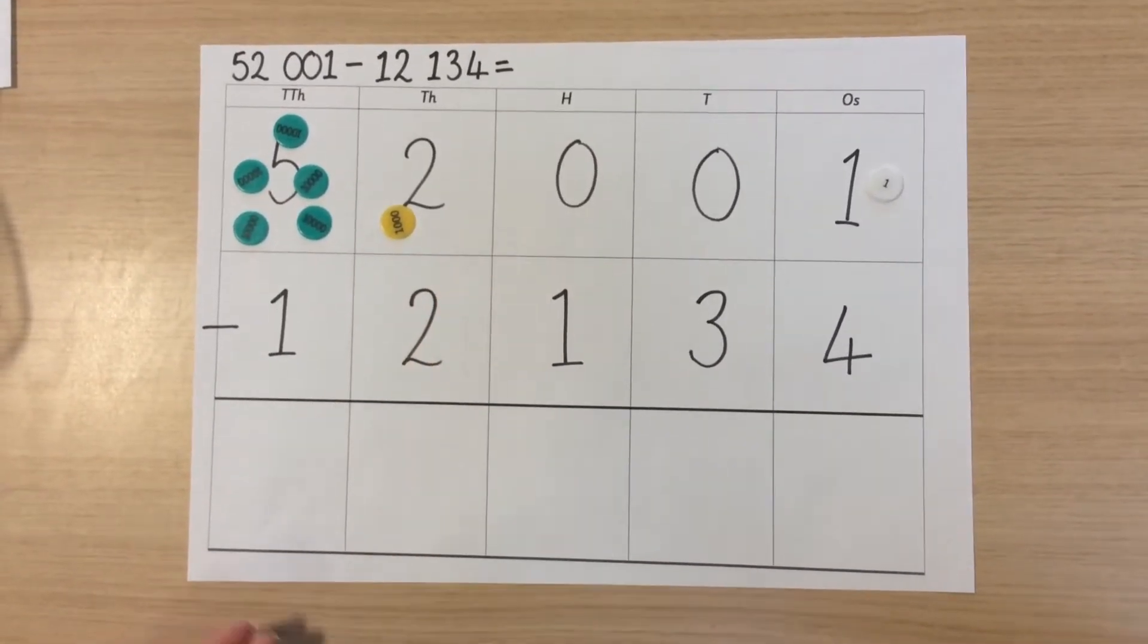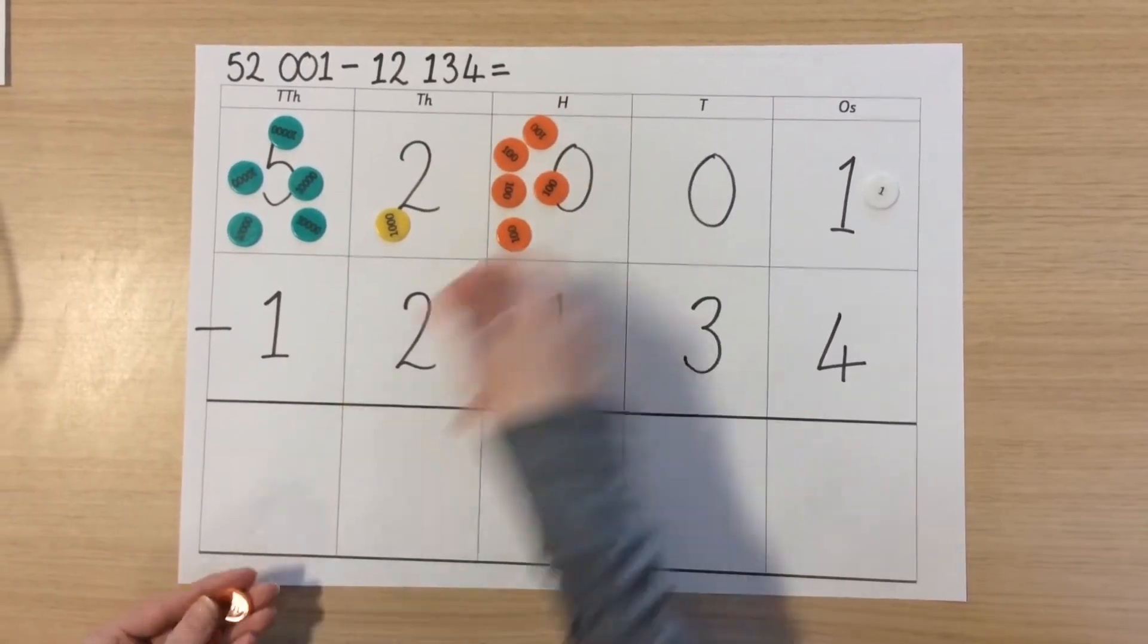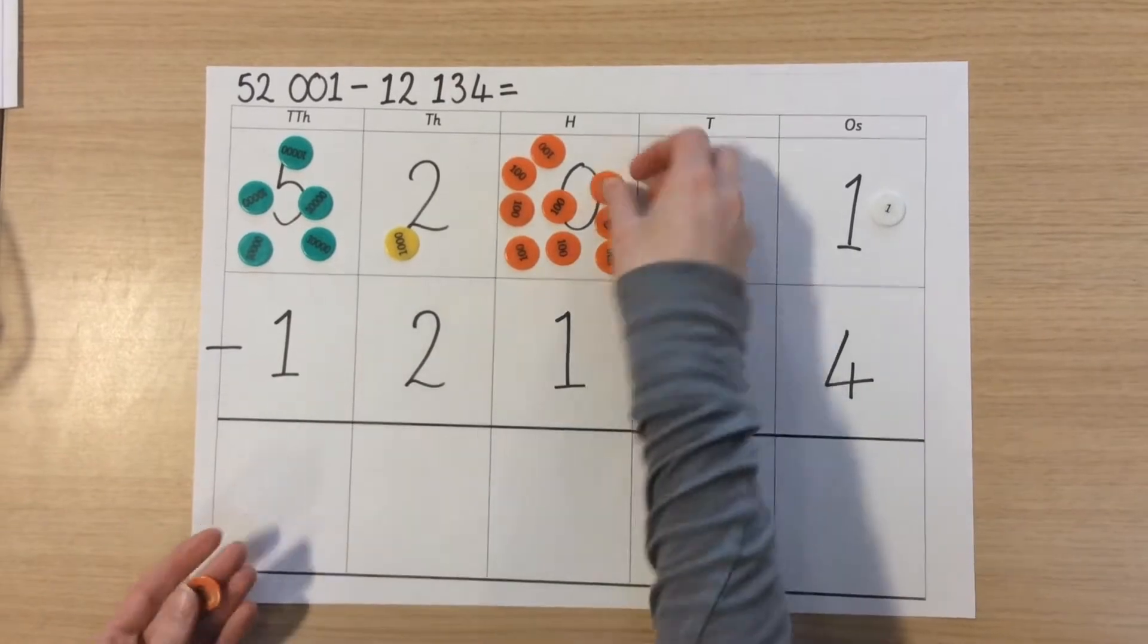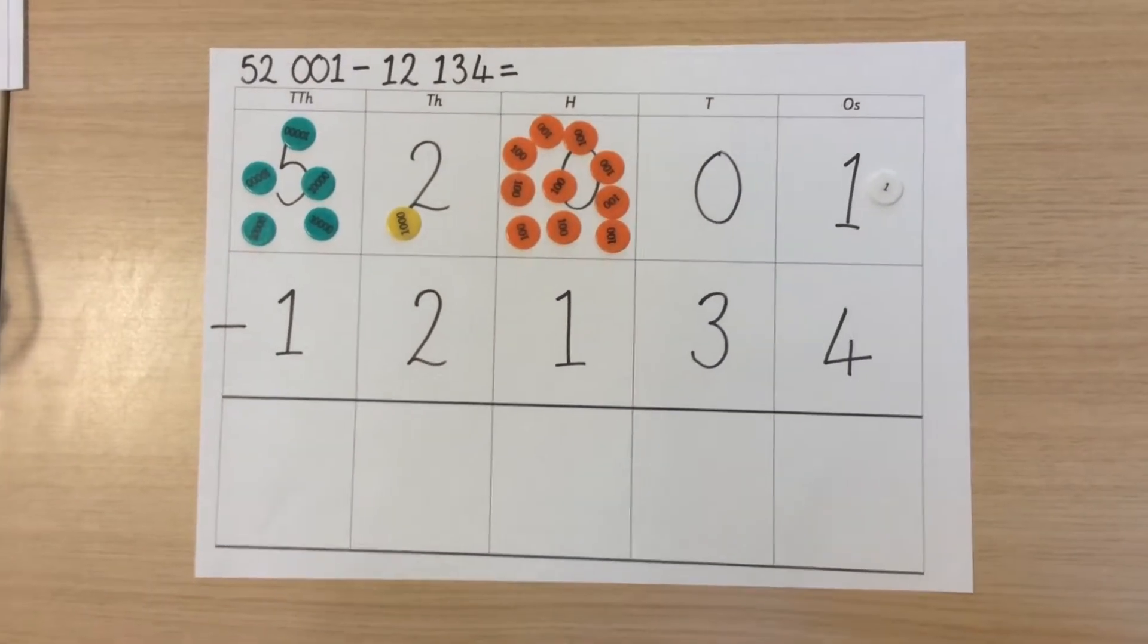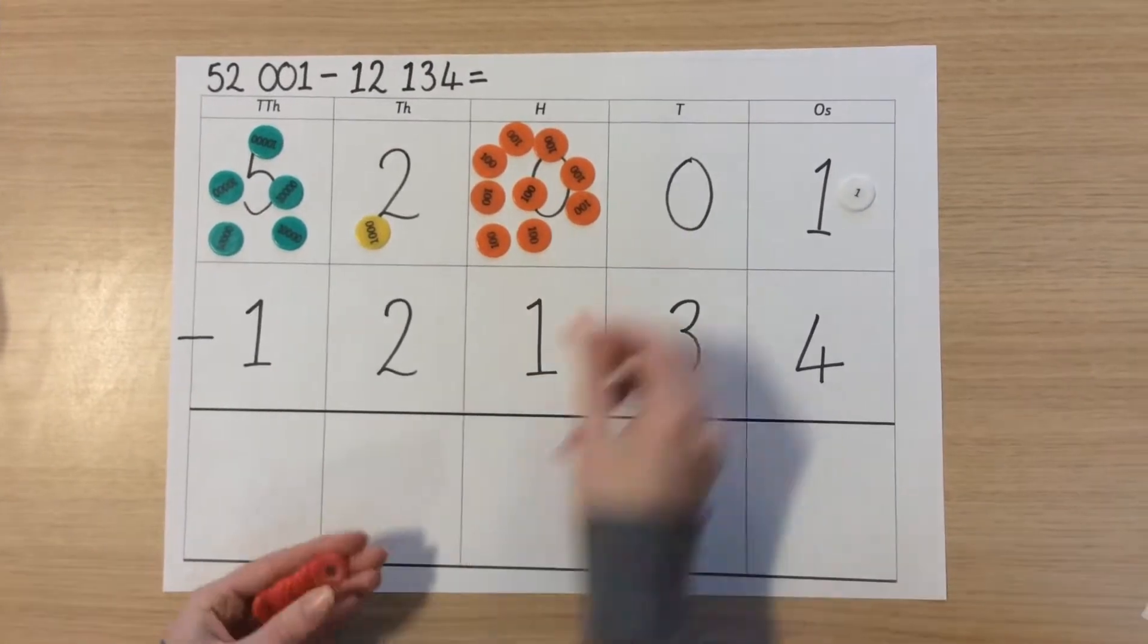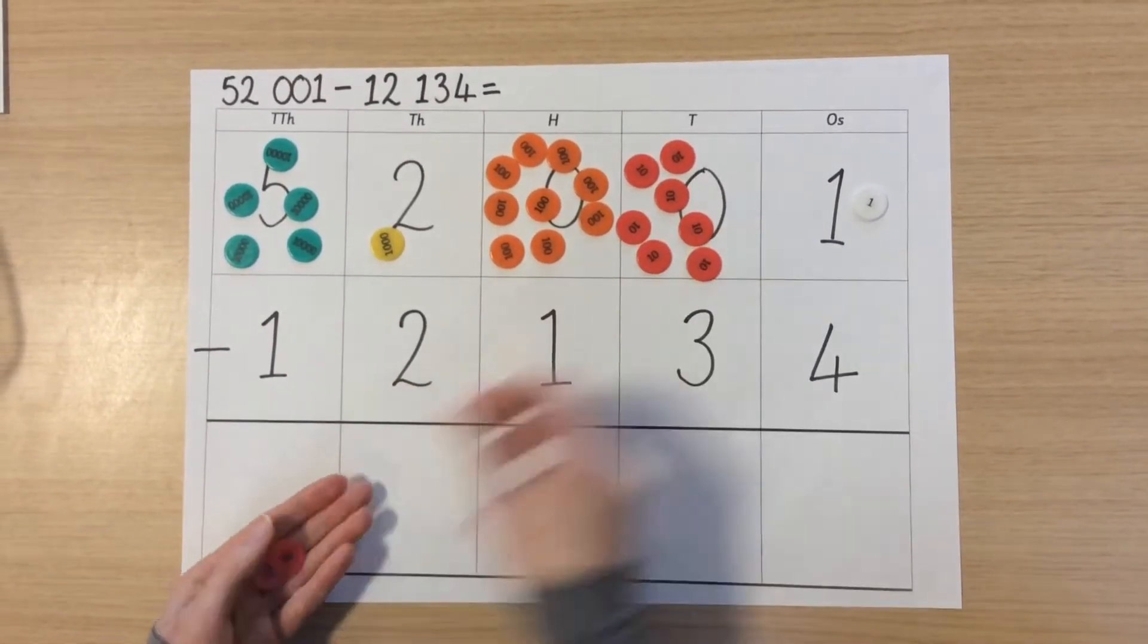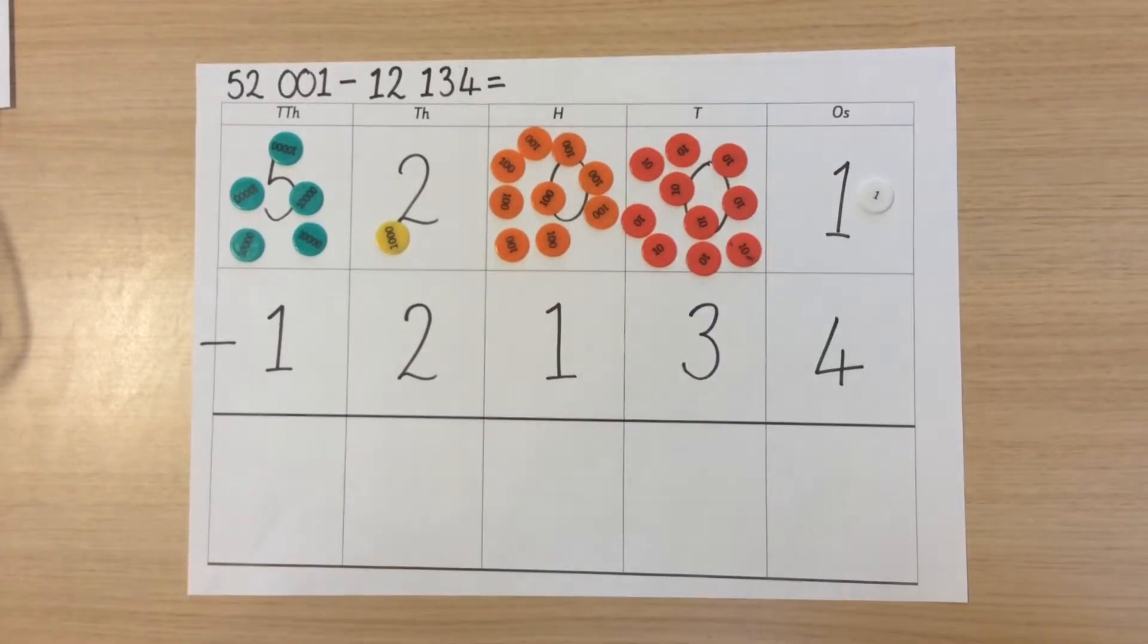We'll exchange one thousand for ten hundreds. We cannot cross more than one place value column at a time. We will then need to exchange one of those hundreds for ten tens. This ensures we have some counters in each place value column rather than just our place value holders.